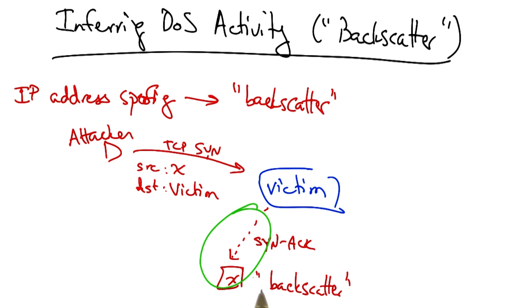These replies to forged attack messages are called backscatter. Now the interesting thing about backscatter is that if we can assume that these source IP addresses are selected by the attacker at random,